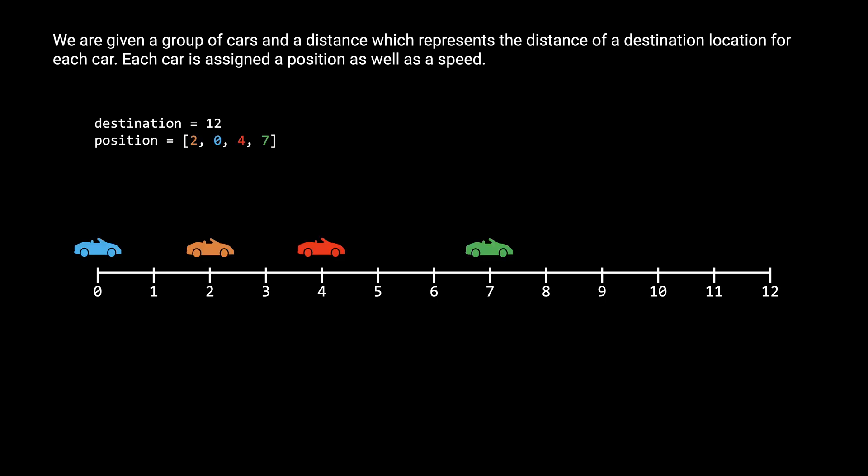We are also given two parallel arrays. The first is a position array, which represents the positions that a car starts out at. For example if the positions given to us are 2, 0, 4, and 7, this means that there are cars that start out at each of these positions. I've given each car a different color just to make it easier to keep track of them. The other array is a speed array, representing the corresponding speed each car travels at — in miles per hour. So the orange car at position 2 travels at 4 mph, the blue car at position 0 at 1 mph, the red car at position 4 at 2 mph, and the green car at position 7 at 1 mph.